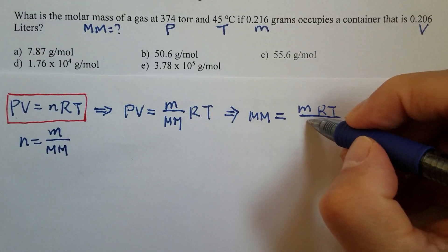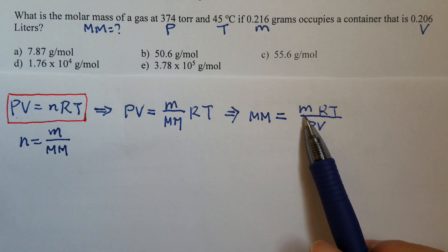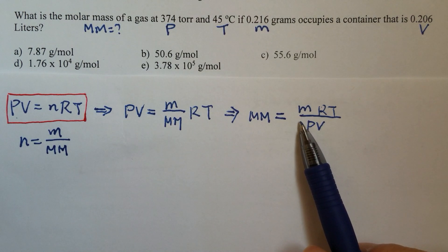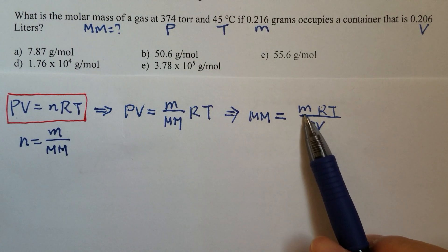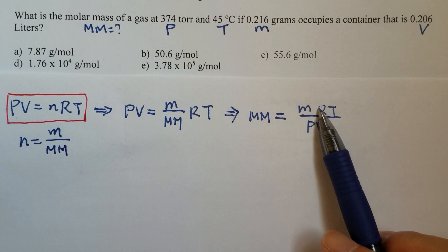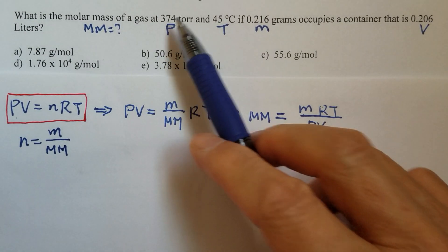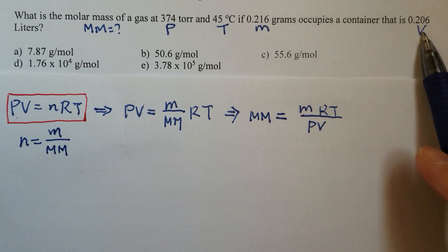Now we have everything we need to calculate the molar mass. The mass, we do have it. R constant, T, yes. Pressure, yes. Volume, yes.